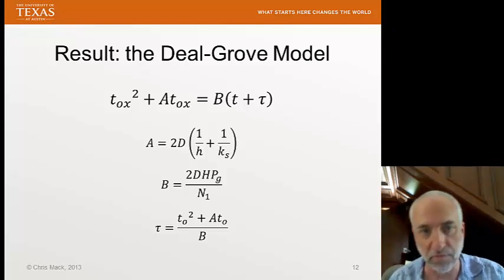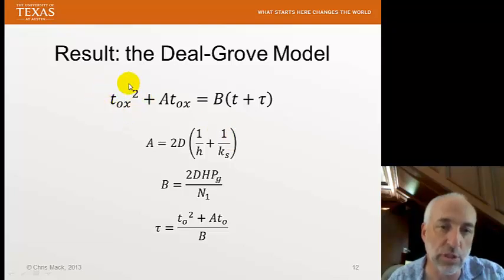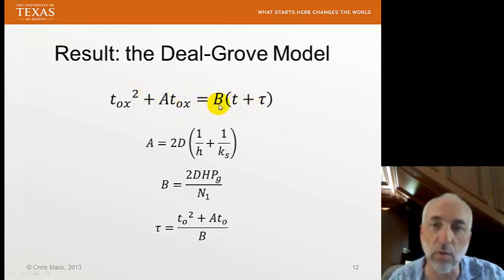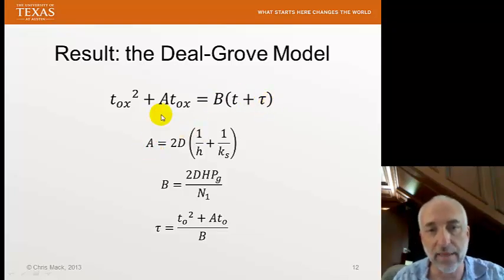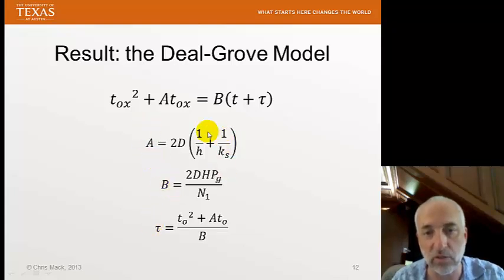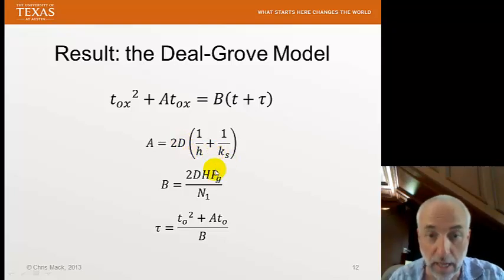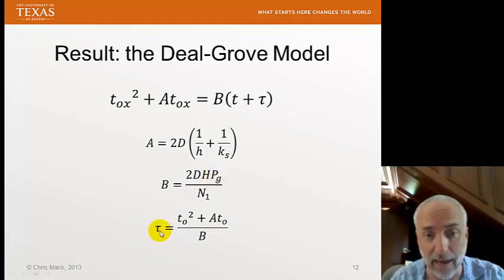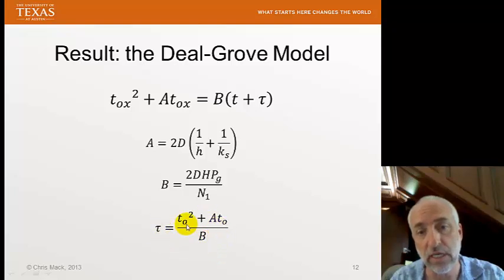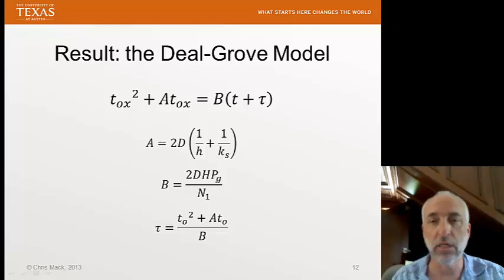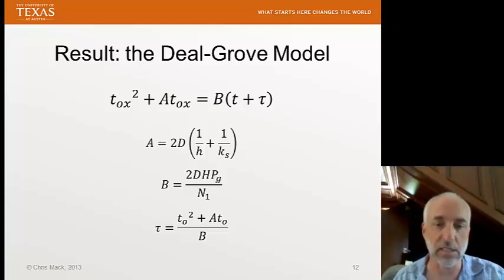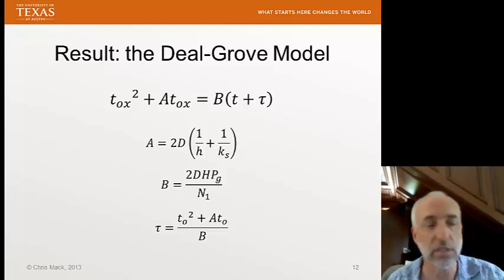The result is a second-order equation: T-ox squared plus A times T-ox equals B times (t + tau), where the constants A, B, and tau are groupings of diffusivity, mass transfer coefficient, and reaction rate constant. B includes the partial pressure in the gas phase of the reactant. Tau is a function of the initial oxide thickness T-0 — essentially the time offset representing how long you would have needed to oxidize to reach thickness T-0.